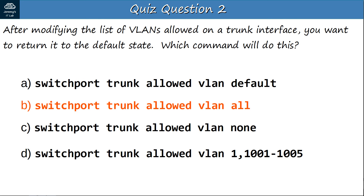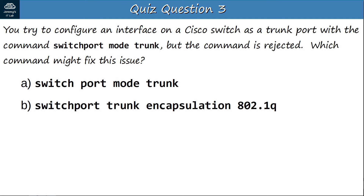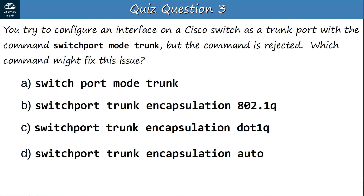Question 3: You try to configure an interface as a trunk port with 'switchport mode trunk' but the command is rejected. Which command might fix this? A: switchport mode trunk. B: switchport trunk encapsulation 802.1Q. C: switchport trunk encapsulation dot1Q. D: switchport trunk encapsulation auto. The answer is C — switchport trunk encapsulation dot1Q. On Cisco switches supporting both 802.1Q and ISL, you must manually specify the encapsulation type before configuring trunk mode. ISL could technically be used instead, but it is almost never used.